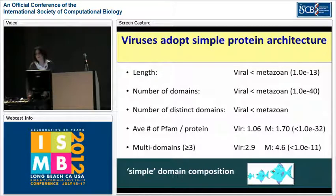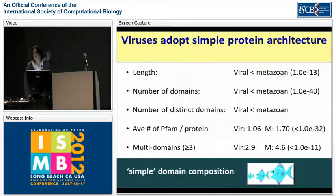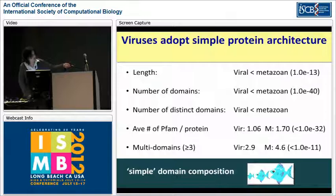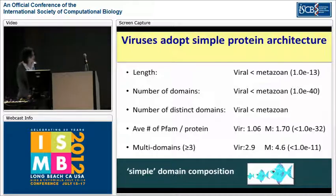Putting everything in numbers: the length is shorter, the number of domains is smaller, the number of distinct domains is shorter, the average number of PFAM domains per protein is smaller, and when we force proteins to be long with at least three domains, there is a very significant reduction in the viral case. The idea is that viruses adopted a simple domain composition - they don't want to deal with complicated domain composition.